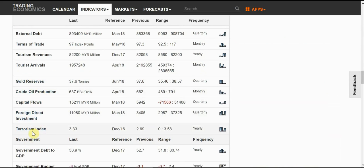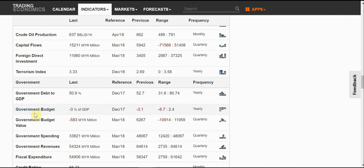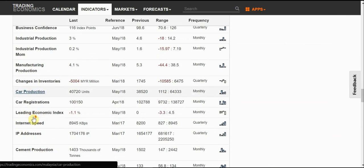It's a terrorism index. This is interesting. There's a terrorism index here. Then we have the car registrations because in a country where you see that a lot of people buying cars, it means the economy is doing well. In a good growing economy, we should see the car registrations increasing.